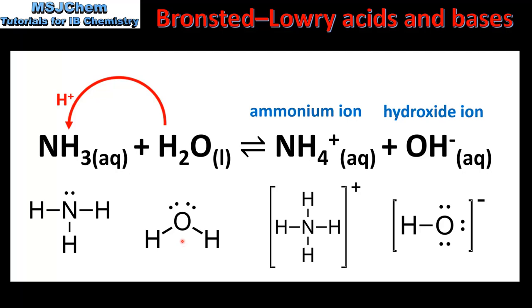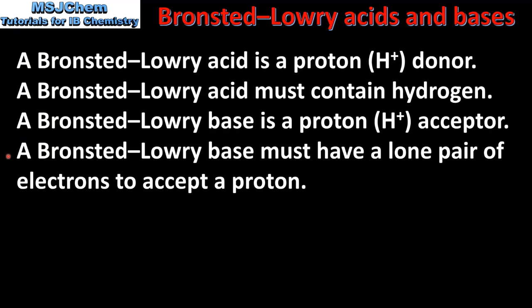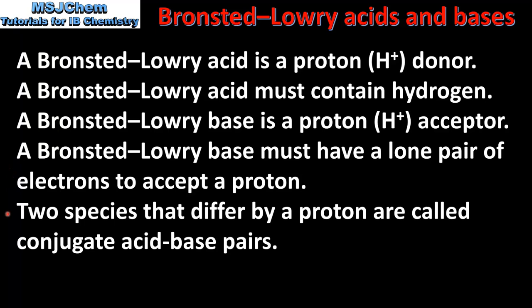Let's end with a summary. A Bronsted-Lowry acid is a proton donor and must contain hydrogen. A Bronsted-Lowry base is a proton acceptor and must have a lone pair of electrons to accept a proton. Two species that differ by a proton are called conjugate acid-base pairs, which are covered in more detail in the next video.